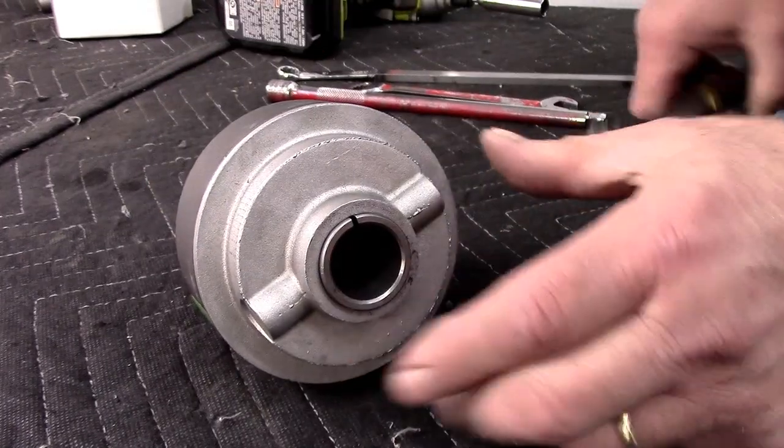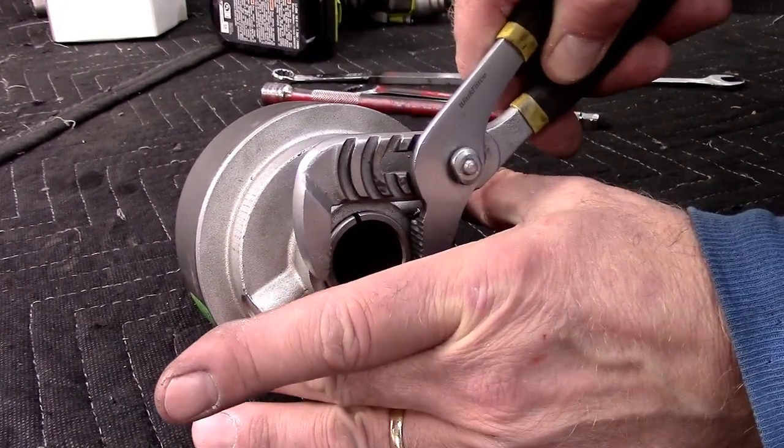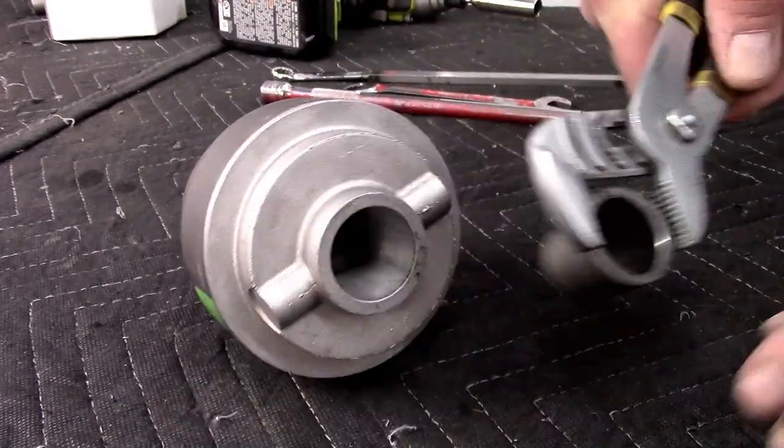If your clutch includes a tapered split bushing instead of a set screw, remove it and reinstall it on the engine's crankshaft before proceeding.